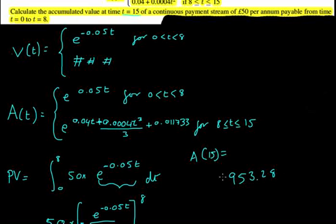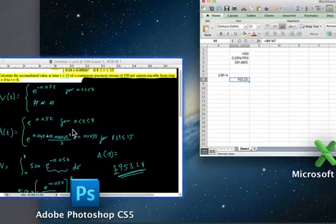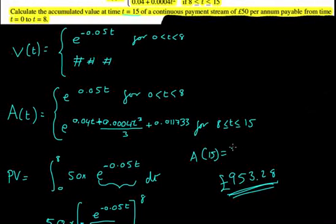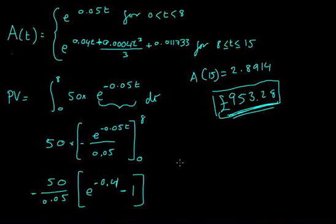So 953.23, that's some pounds. This is the total answer, this is our final value, and it was 2.8914. Here we go, 2.8914, that's now a 15-year accumulation value. So this is really it. I hope that makes sense, and if it doesn't, then just ask the question. Okay, thanks for watching.